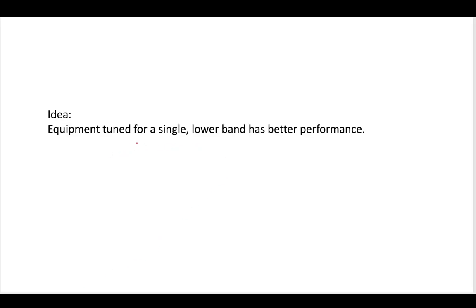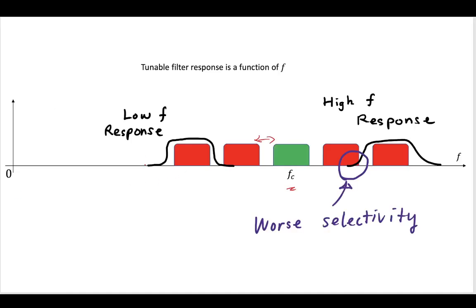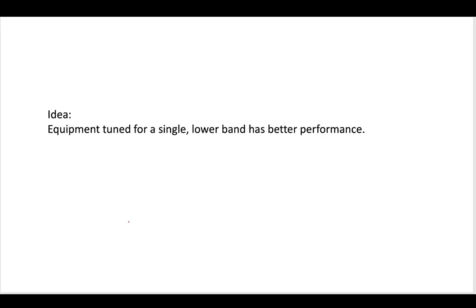So the idea is that equipment that's tuned for a single lower band is going to have a better performance, going to be able to remove adjacent signals, channels or noise from it. So just like in here, we kind of said, okay, the higher you go in frequency, the worse your tunable filter is going to be. So if we could do something so that we're only using a tunable filter at a low frequency, then we're going to get better performance out of this. And so that's where this mixer idea comes from. Can we mix some things together so that we can use tunable filters at lower frequency where they're going to perform better?